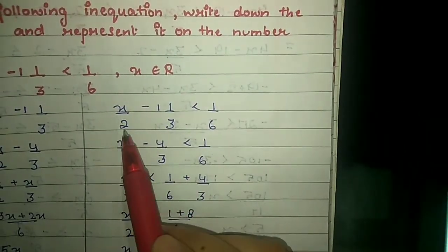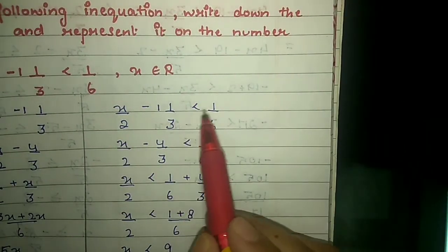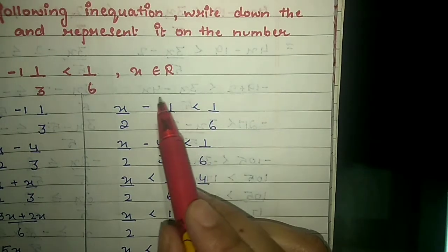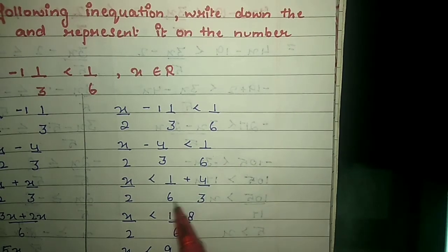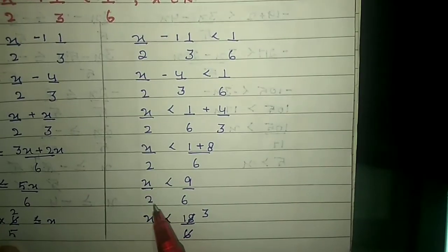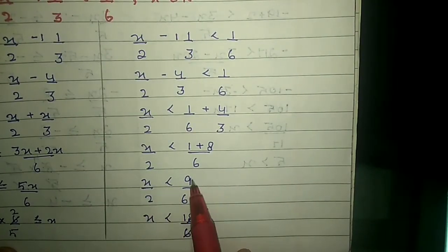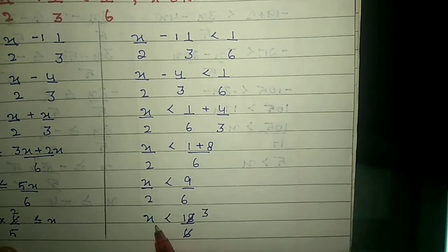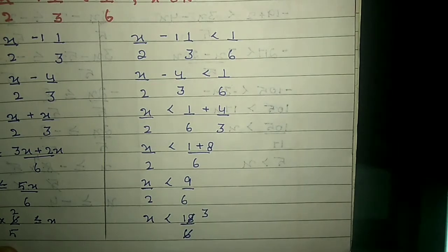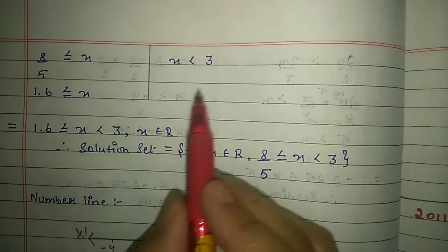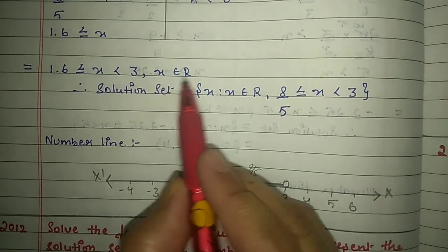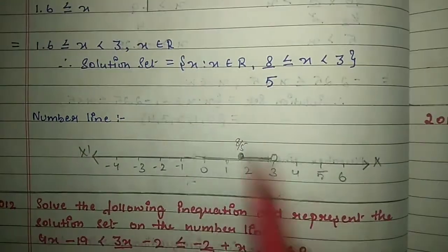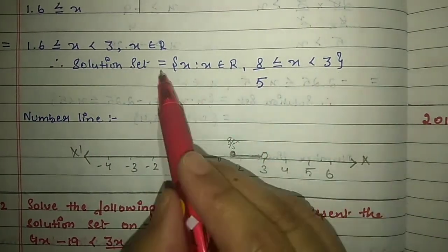For the remaining half: x/2 minus 1 and 1/3 < 1/6. Convert to improper fraction, shift across, take LCM and simplify, giving x/2 < 9/6, or x < 18/6 = 3. Shifting 5/6 across for division in the first half gives 8/5 ≤ x. Joining both: 8/5 ≤ x < 3, i.e., 1.6 ≤ x < 3, x belongs to real numbers. Write the solution set in flower brackets.